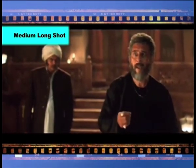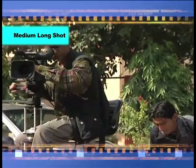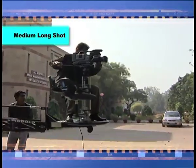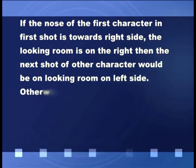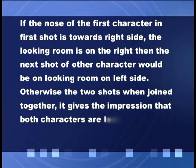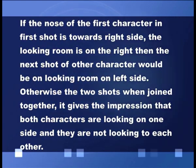Medium long shot can be of a group of people and is especially useful in a complex or developing shot with more camera movement — trolley, crane, jimmy jib, etc. Medium close up shots are usually used in TV format in one or two forms: either facing the camera (direct to camera) or three-quarter profile. In its first form, it is composed with adequate headroom, framed above the person's elbow and below the armpit. In its second form, it creates perfect looking room. If the nose of the first character in the first shot is towards the right side, then the next shot of the other character would have looking room on the left side. Otherwise, when the two shots are joined together, it gives the impression that both characters are looking in one direction and not towards each other.